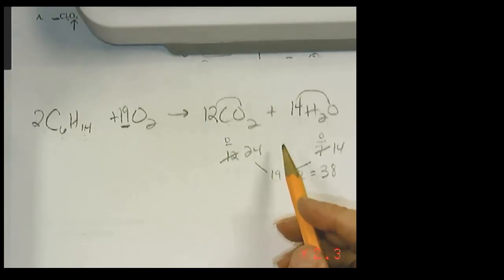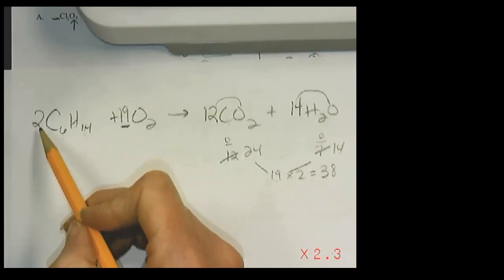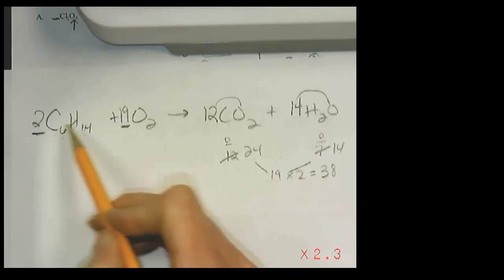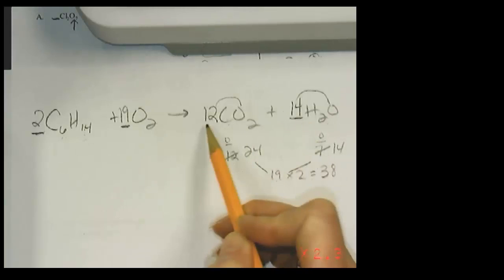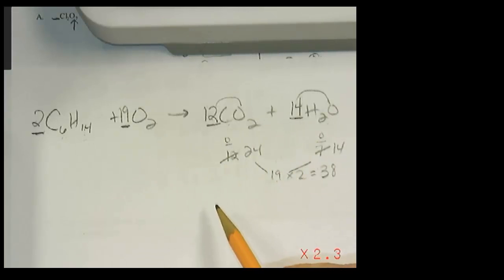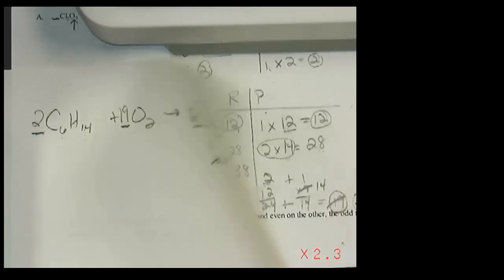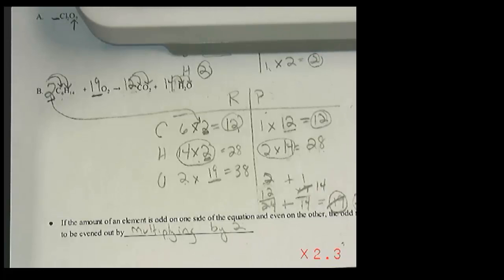So if you find that easier to do than the atom inventory, you can use that at any time. The only thing I grade on a balanced equation is, do you have the correct coefficients? So it's up to you what method works best. So there are a few examples for you to try. So go ahead and work on the next practice problems.